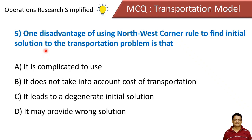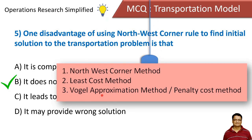One disadvantage of using the northwest corner rule to find the initial solution is: it is complicated to use, it does not take into account the cost of transportation, it leads to a degenerate initial solution, or it may provide a wrong solution. The correct answer is it does not take into account the cost of transportation. Among the three methods for initial feasible solution, the northwest corner method does not consider the cost element, whereas the least cost method and VAM (penalty cost method) do consider cost, giving a better answer.